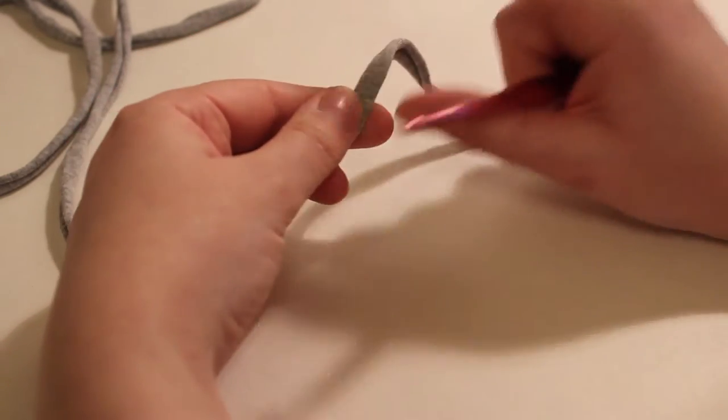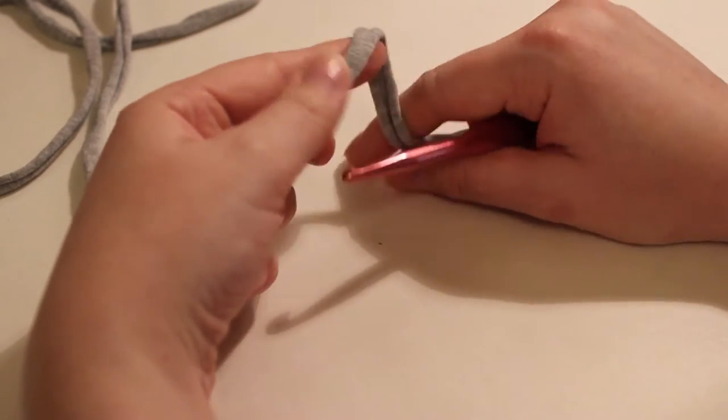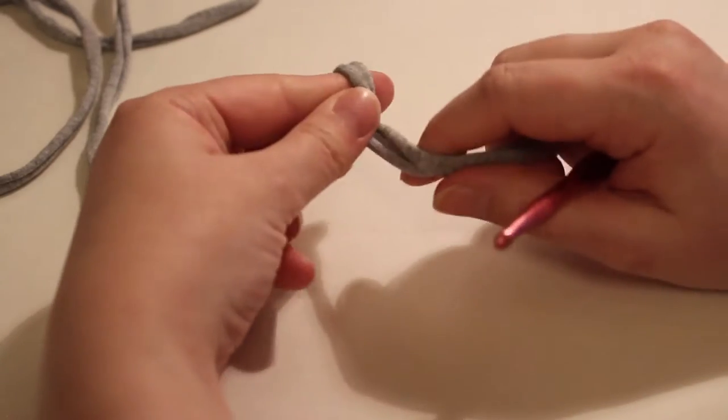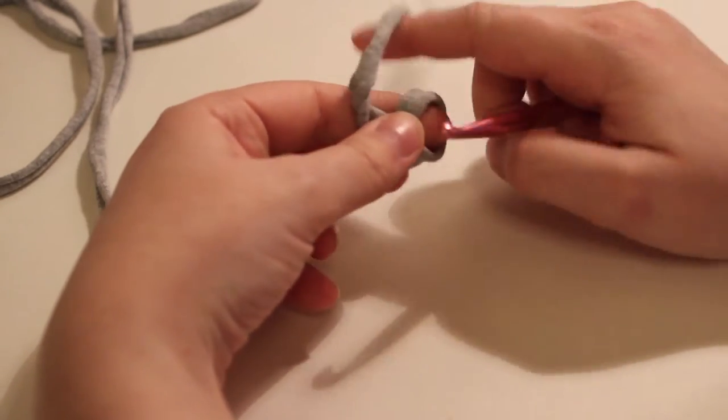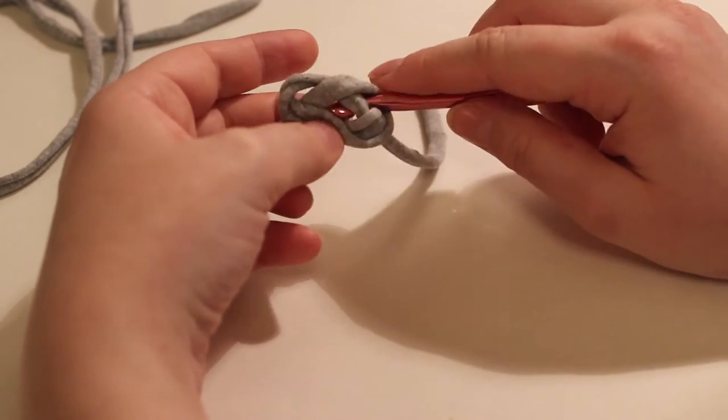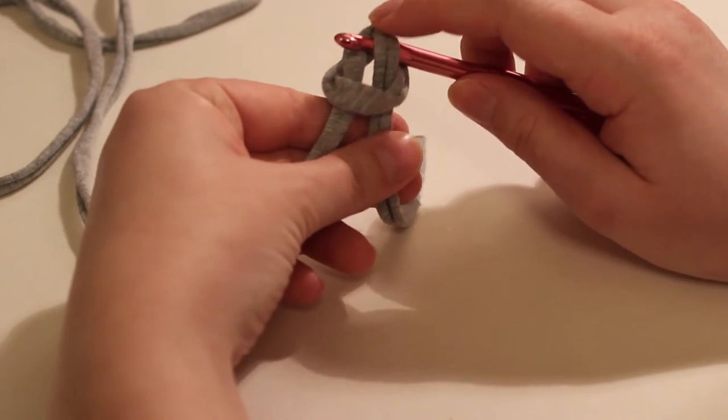There are many ways of doing that, but I do it this way: you put the yarn around your finger and make a loop, then you insert the hook into that loop, get the yarn, and then you pull it through.